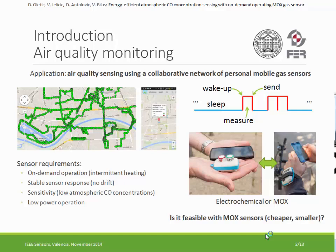The key requirements are: a stable sensor response with no drift, high sensitivity for measuring atmospheric carbon monoxide concentrations — which are quite low, on the order of about one ppm, roughly a bit more than one microgram per cubic meter — and low power operation, as these are portable devices.